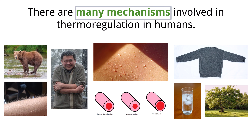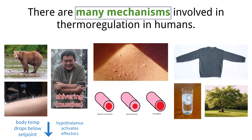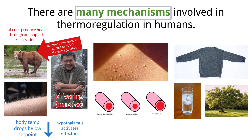There are four additional mechanisms involved in body temperature regulation when the body drops below the set point. In addition to stimulating release of thyroxin, the hypothalamus activates effectors. These include skeletal muscles, which can cause shivering to generate heat. Brown adipose tissue also plays an important role in producing heat through uncoupled respiration — a form of respiration that produces heat rather than ATP — especially important in hibernating animals and infants. Additionally, hair erection can occur, when tiny muscles at the base of hair follicles contract causing hairs to stand up, trapping insulating air close to the skin in other mammals. Lastly, vasoconstriction occurs when blood vessels near the surface of the skin narrow, reducing blood flow to the skin and minimizing heat loss to the environment.